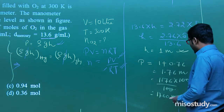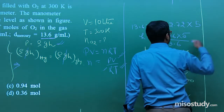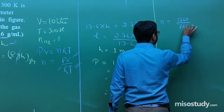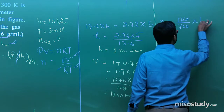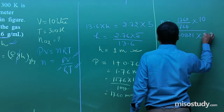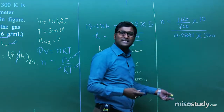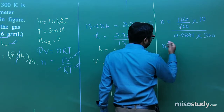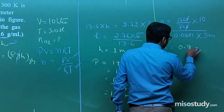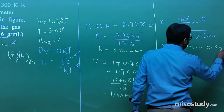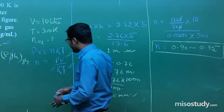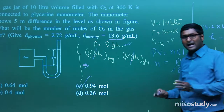Now we have P = 176 mm Hg. Convert to atm: 176/760. V = 10 L, R = 0.0821, T = 300 K. Solving n = PV/RT, the approximation ranges from 0.90 to 0.95. Checking the options, the value is 0.94. The approach: use ρgh for glycerine, compare to mercury standard, find H, get total pressure, then apply ideal gas law.